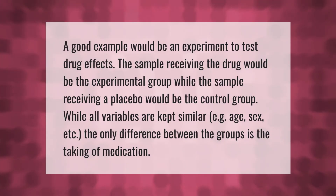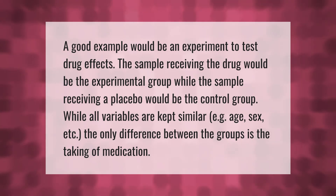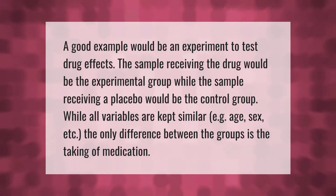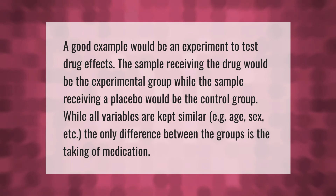A good example would be an experiment to test drug effects. The sample receiving the drug would be the experimental group, while the sample receiving a placebo would be the control group. While all variables are kept similar — e.g., sex, etc. — the only difference between the groups is the taking of medication.